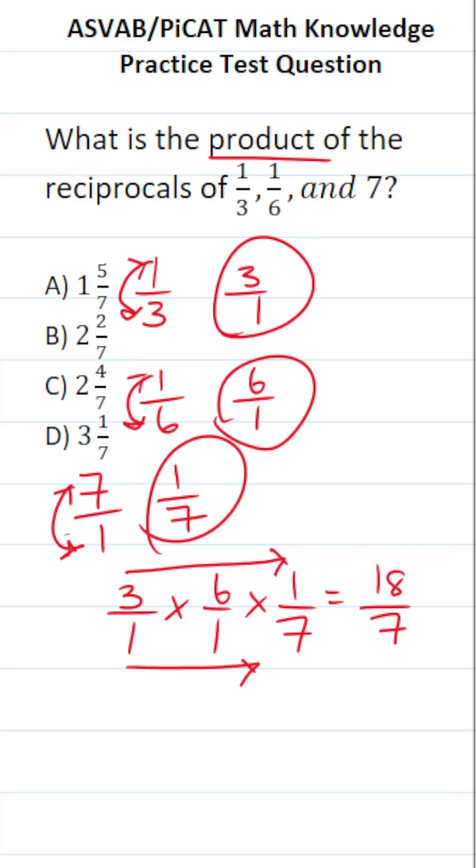Of course, 18/7 is an improper fraction, so it's not an answer choice. We have to convert it to a mixed number. To do that, we're going to treat this like long division.